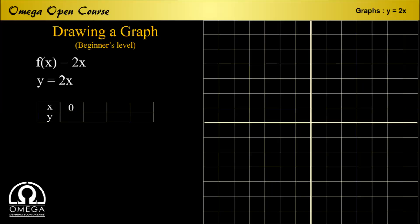If x is equal to 0, then putting 0 in the equation y = 2x, we get y is equal to 0. So our coordinate is (0,0) and we plot the point (0,0) on our graph.